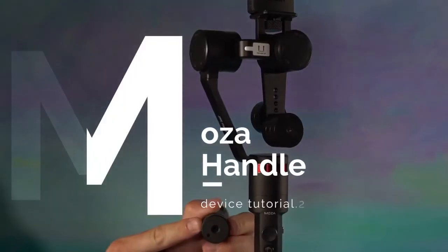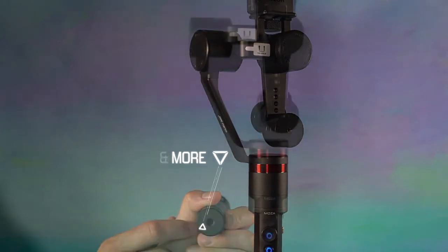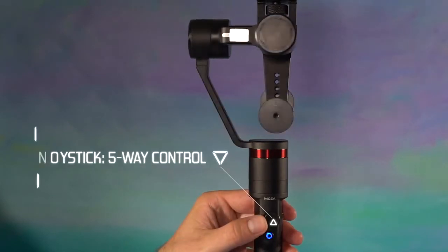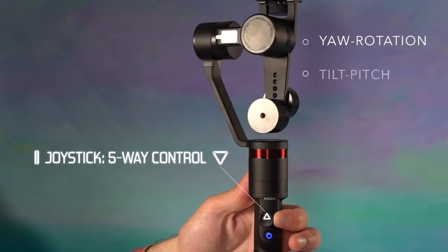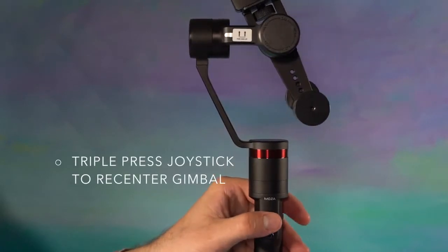Moza handle. At the bottom of the handle is a one-fourth mount for tripod or monopod. The power button is located on the handle just below the joystick. The joystick is a five-way control that controls yaw rotation, tilt pitch, and mode selection. Triple press the joystick to re-center the gimbal.